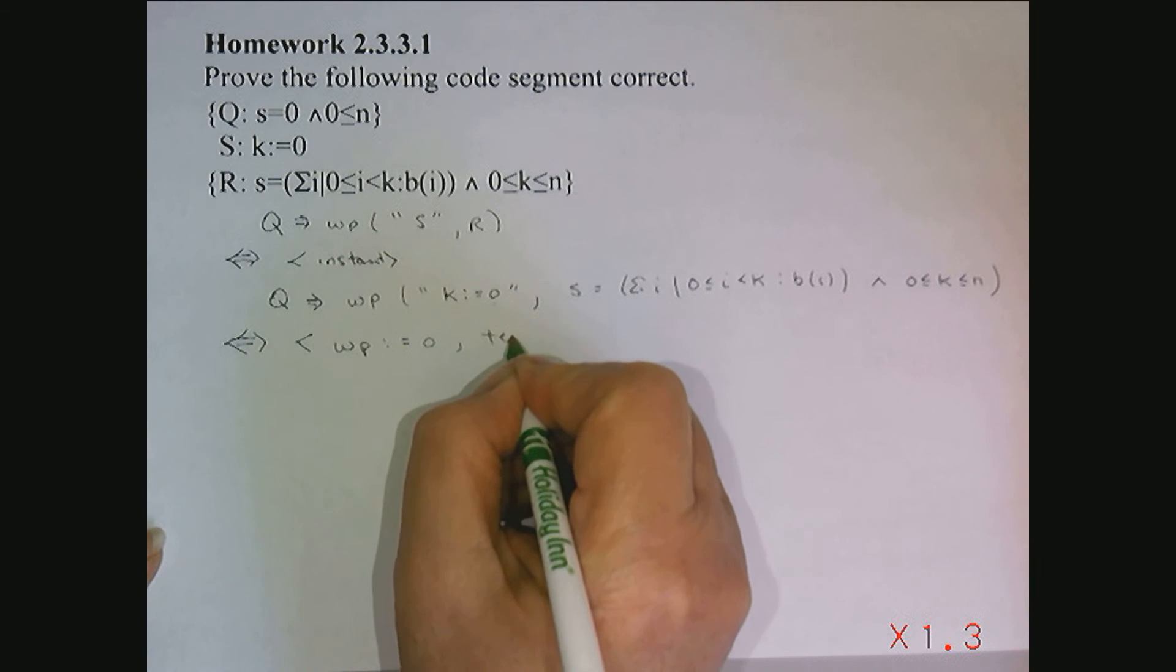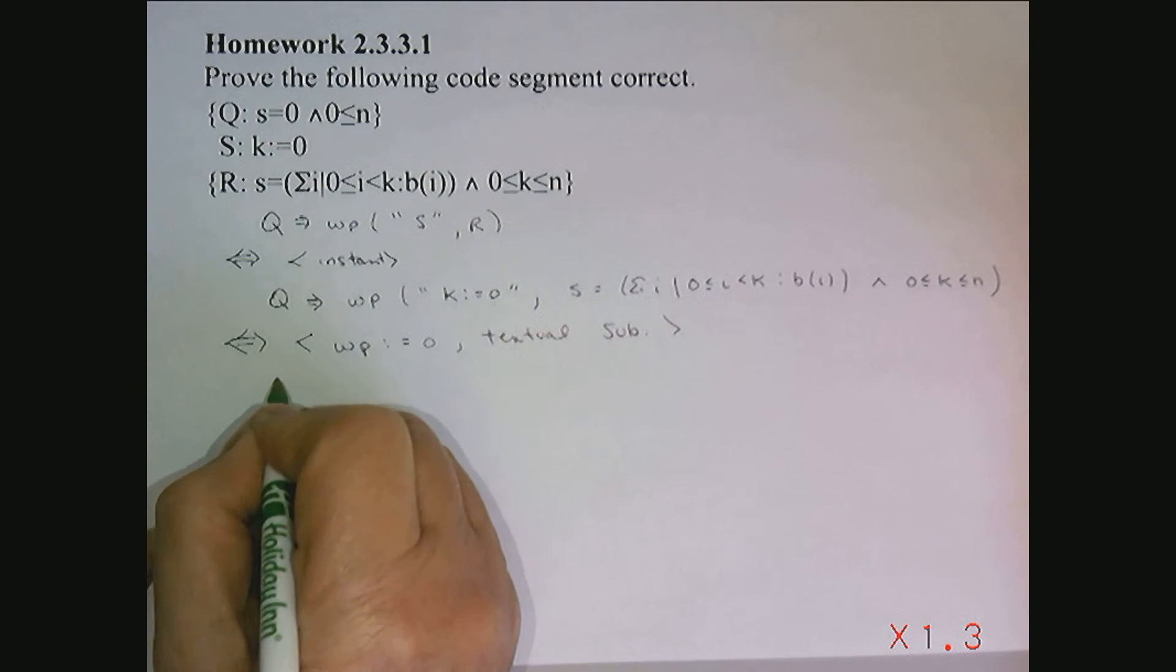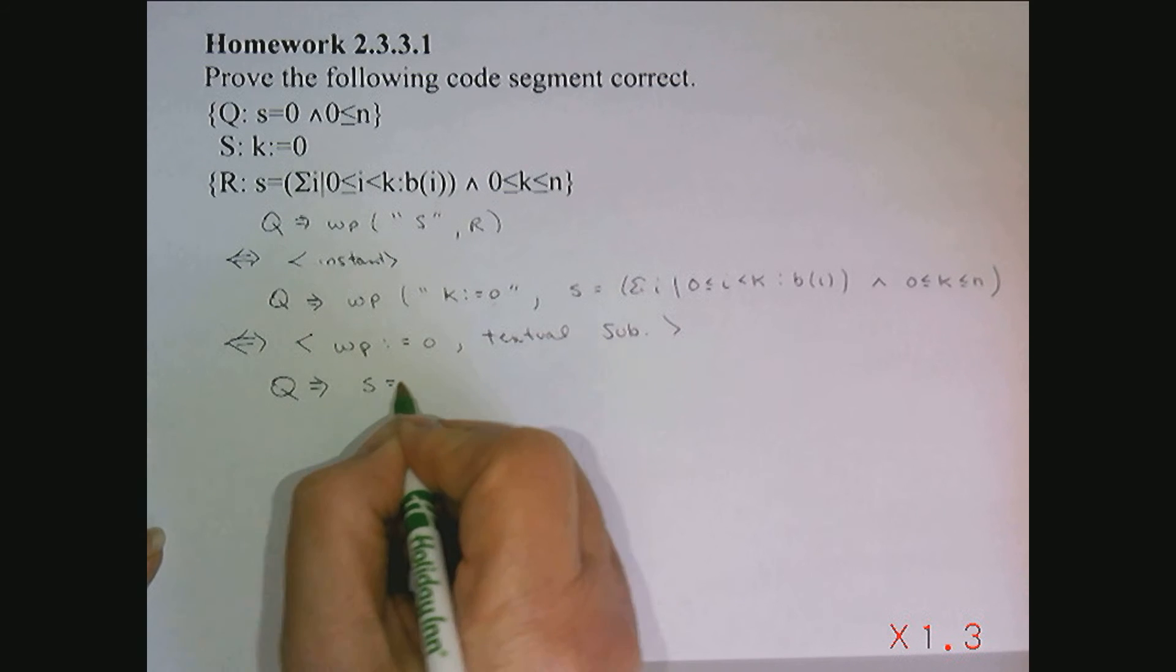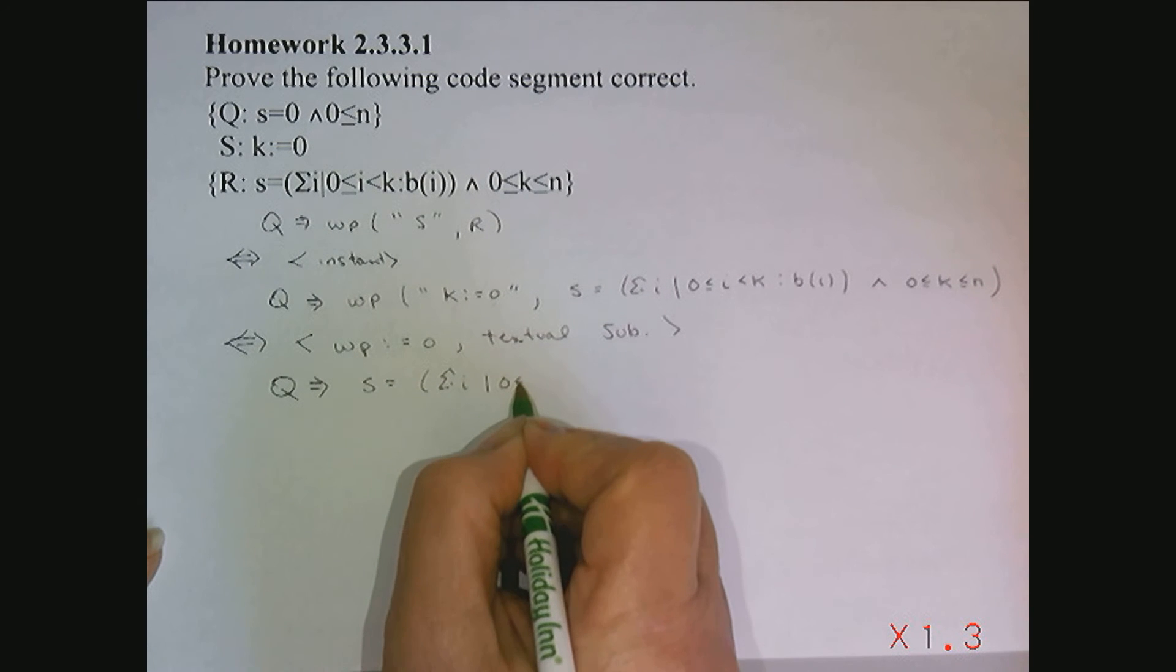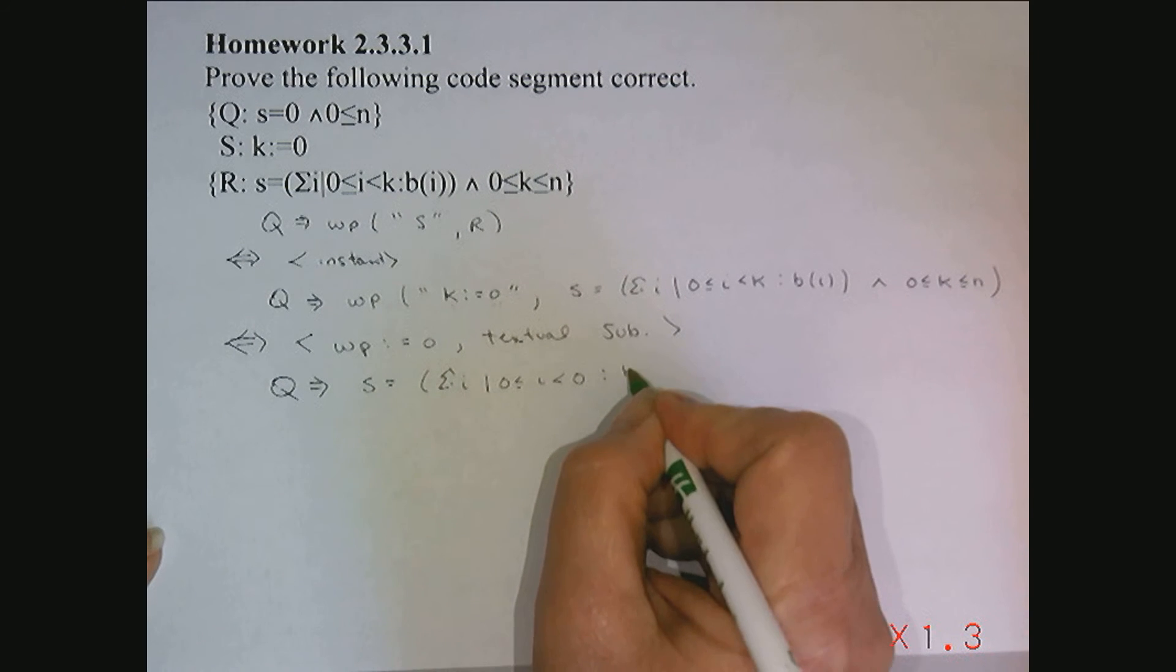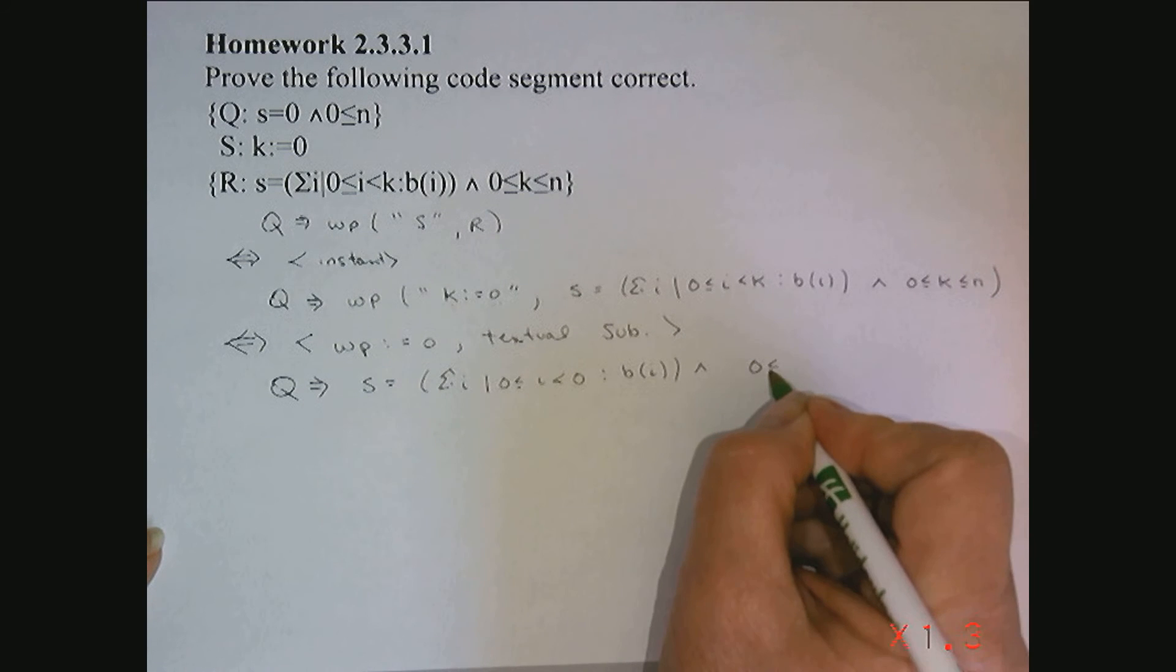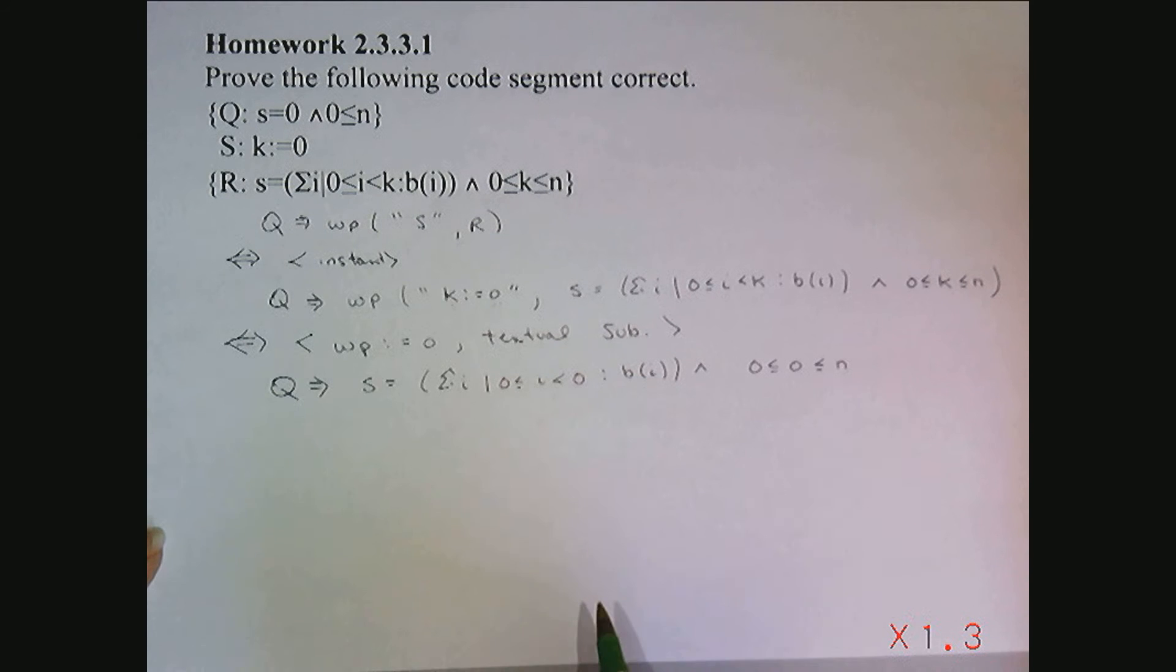So what does this mean? It means that Q implies S is equal to the sum over I, 0 less than or equal to I, less than 0, since we need to substitute 0 for K, of B(I), and 0 is less than or equal to 0, is less than or equal to N.